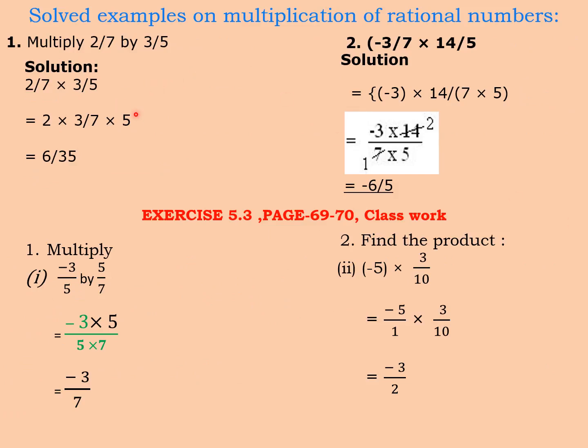Let us have some solved examples. Multiply 2 by 7 by 3 by 5. So how we will solve? 2 by 7 into 3 by 5. 2 and 3 are numerators, we will multiply them. 7 and 5 are denominators, we will multiply. We will get the answer as 6 by 35.